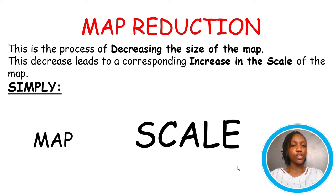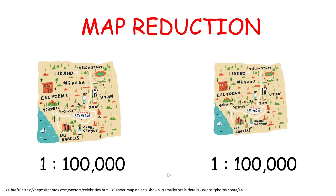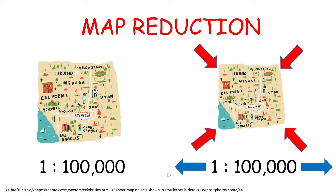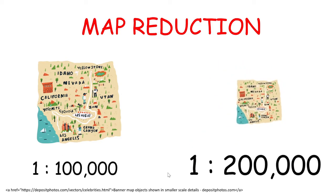Map reduction. This is the process of decreasing the size of the map. This decrease leads to a corresponding increase in the scale of the map. Simply, decreasing the size of the map leads to an increase in its scale. And let's look at a similar illustration. Reducing the size of the map leads to an increase in its scale.